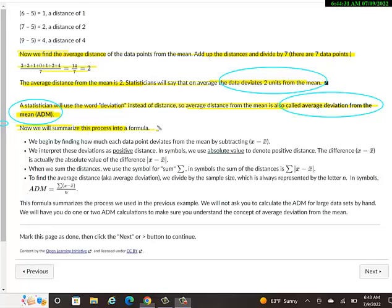Now we'll summarize this process in a formula. This is probably a good idea to write this down. It's kind of a new formula we haven't seen before. We begin by finding how much each data point deviates from the mean by subtracting. So take that data point and subtract the mean, x bar. And like we said, we always try to make it positive. So imagine the absolute value.